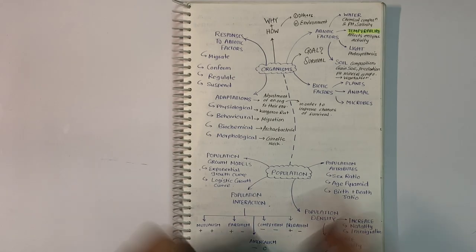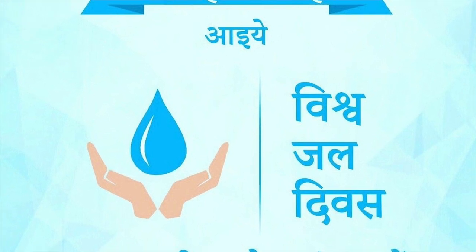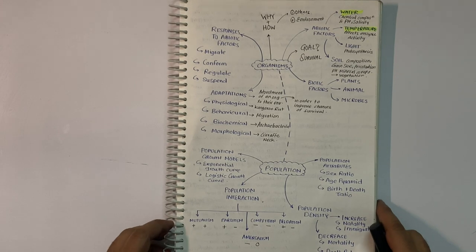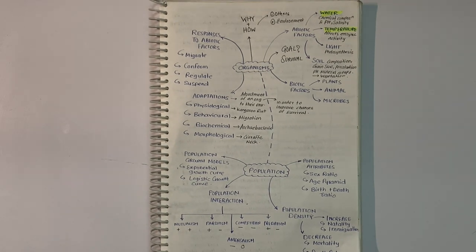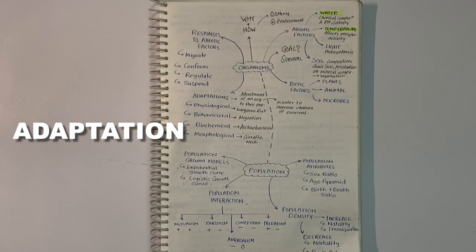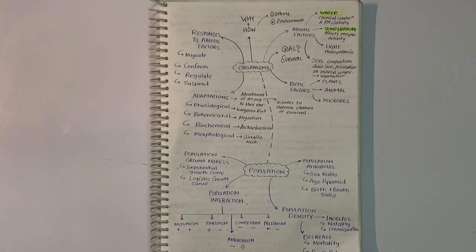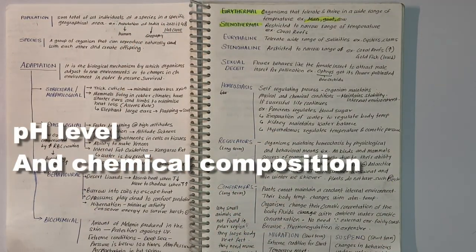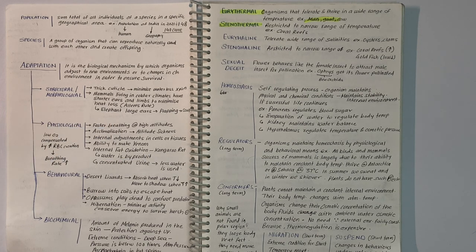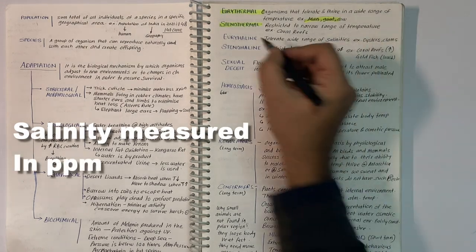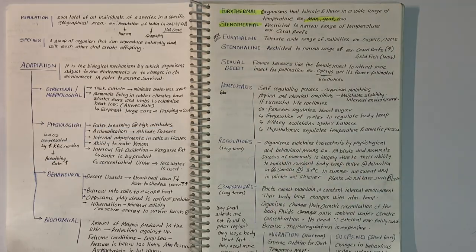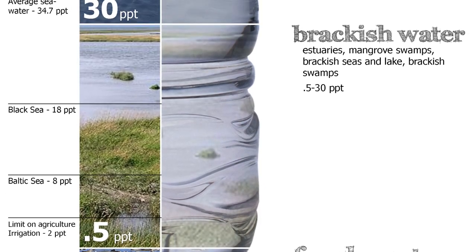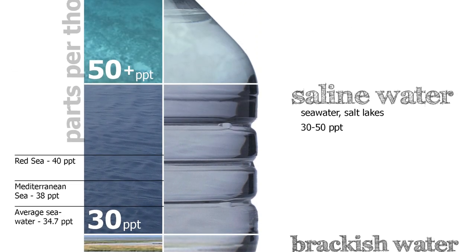The next important abiotic factor is water. Its availability is so limited in deserts that only special adaptations make survival possible. The productivity and distribution of plants is heavily dependent on water. For aquatic organisms, water quality — including chemical composition, pH level, and salinity — is also important. Salinity is less than 5 in inland waters, 30–35 in seas, and more than 100 in some hypersaline lagoons.